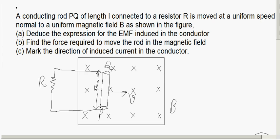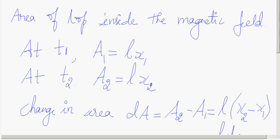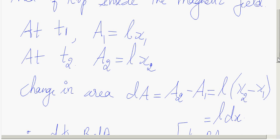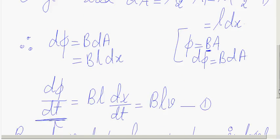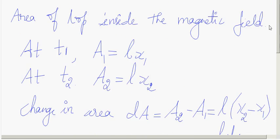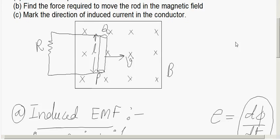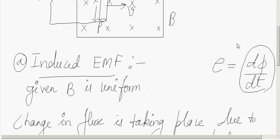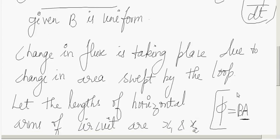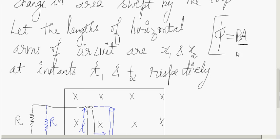This change in area results in a change in flux. We have already covered this — let us recall. We have a picture showing how the area changes when the rod is moved.